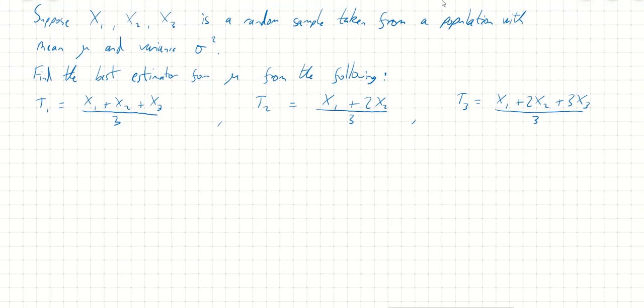In this video, we're going to look at statistical estimators, specifically unbiased and efficient estimators. Here's a question: suppose x1, x2, x3 is a random sample taken from a population with mean mu and variance sigma squared. The question is to find the best estimator for mu from the following.